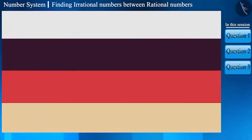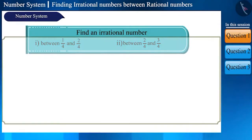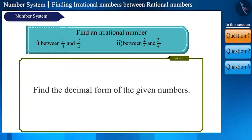So let's take the first question. Find one irrational number between the rational numbers 1 by 4, 2 by 4 and 3 by 4. What to do first? We will first find their decimal forms by the division method.